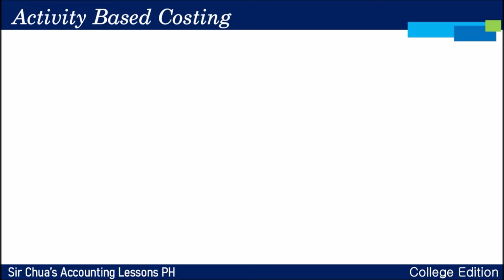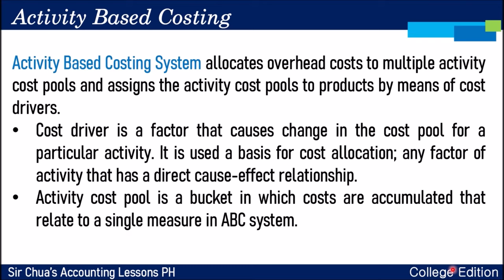Activity-Based Costing System allocates overhead costs to multiple activity cost pools and assigns the cost pools to products by means of cost drivers. We have two new terms to understand: cost driver and cost pool. A cost driver is a factor that causes change in the cost pool for a particular activity. It is used as a basis for cost allocation.